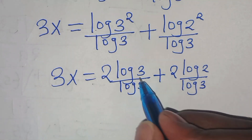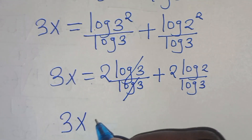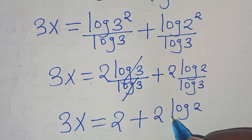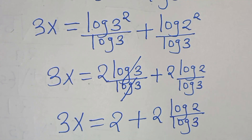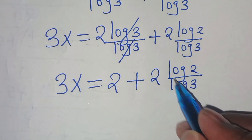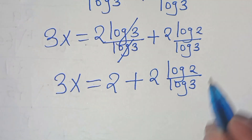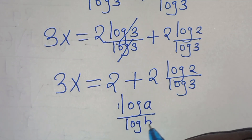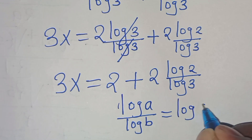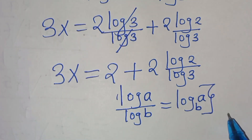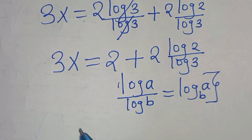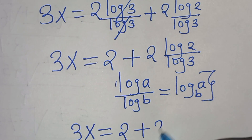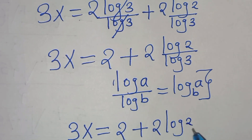So log 3 and log 3 simplify, giving us 3x equals 2 plus 2·log 2 divided by log 3. Now log 2 over log 3 is in the form log a divided by log b, which we can express as log a to base b. Applying this property, 3x equals 2 plus 2·log₃2.